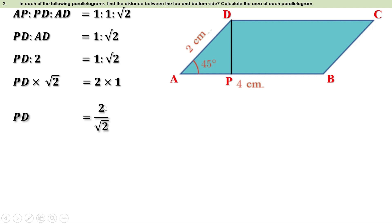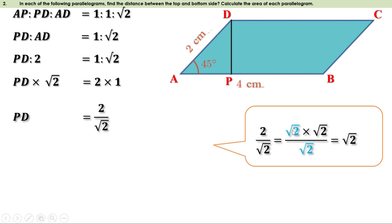Therefore PD = 2/√2. Now 2 means √2 × √2, so we can write 2/√2 as (√2 × √2)/√2. Cancelling √2 and √2, we get √2. That means 2/√2 = √2, or PD = √2 centimeters. That means the distance between the top and bottom sides is √2 centimeters.